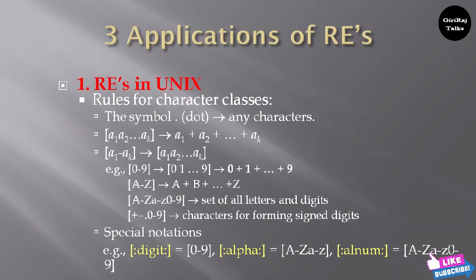First one is rules for character classes. The symbol dot refers to any characters a1, a2, up to ak, which gives to these all you can write as a1 plus a2 plus up to ak. [a1-ak] derives a1, a2, up to ak.